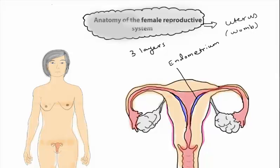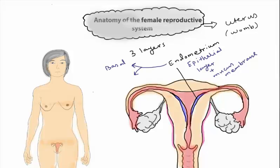The endometrium is composed of an epithelial layer plus a mucous membrane, and it is itself divided into two parts: a basal layer and the functional layer. The functional layer is the hormone-sensitive layer which gets sloughed off during the menstrual cycle.